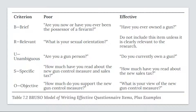Finally, effective questionnaire items are objective—they don't reveal the researcher's own opinions or lead participants to answer in a particular way. Table 7.2 shows examples of poor and effective questionnaire items based on the BRUSO criteria. The best way to know how people interpret question wording is to conduct a pilot test and ask a few people to explain how they interpreted the question.